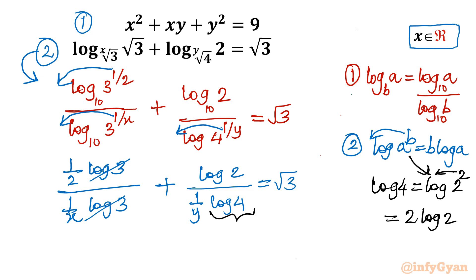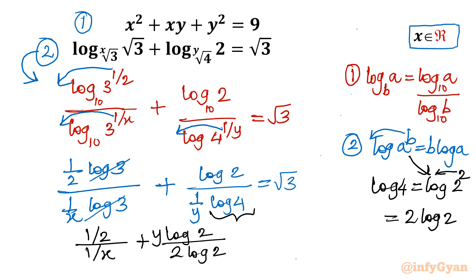Writing it out: we get one half divided by 1 over x, plus log 2 divided by y times 2 log 2. The log 2 terms cancel, and we are left with a simplified equation. So we get x over 2 plus y over 2 equal to root 3.